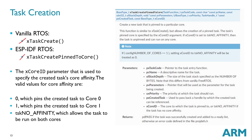The key thing is the xCoreID parameter, which is the last parameter we specify when creating a task. You can specify 0, which means the task will be tied to Core 0; 1 means tied to Core 1; or if you put tskNO_AFFINITY, the task is allowed to run on both cores.